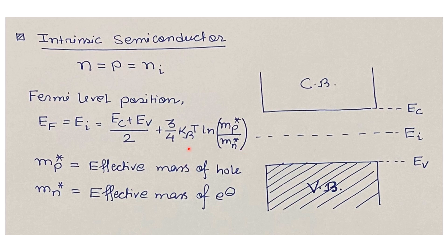Here, T is the absolute temperature, mp* is the effective mass of holes in the valence band, and mn* is the effective mass of electrons in the conduction band. From the band diagram, we can see that the intrinsic Fermi level Ei lies in between EC and EV.